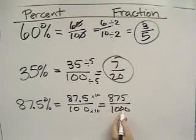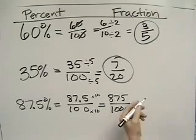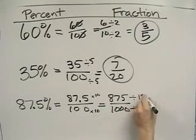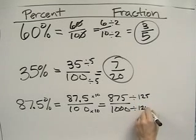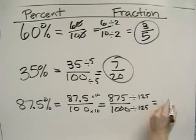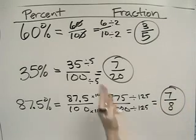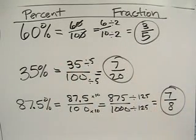Now we've gotten rid of the decimal, and now we need to reduce. We can reduce both the numerator and the denominator by 125. If we do so, we'll end up with 7 eighths. And that's how you turn a percent into a fraction.